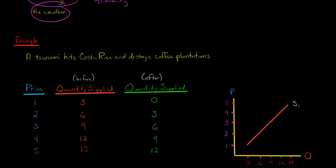Now what we can do is say, what's going to happen now that the tsunami wiped out a bunch of coffee plantations? Is that going to increase or is that going to decrease the supply of coffee? Well, it's pretty clear in this example that it's going to decrease the supply of coffee because a bunch of coffee plantations got wiped out. So we're going to have a decrease in supply.